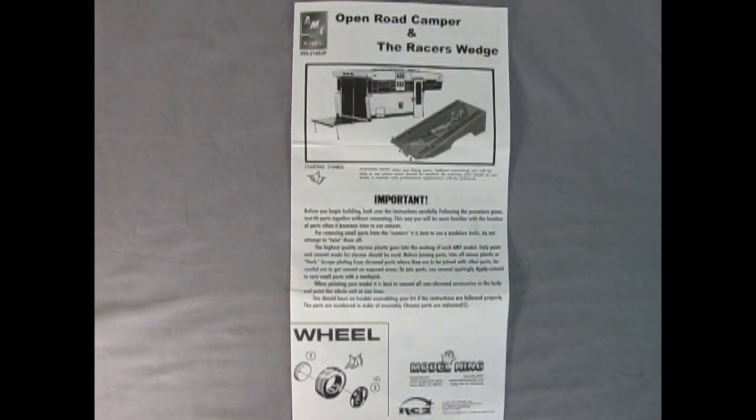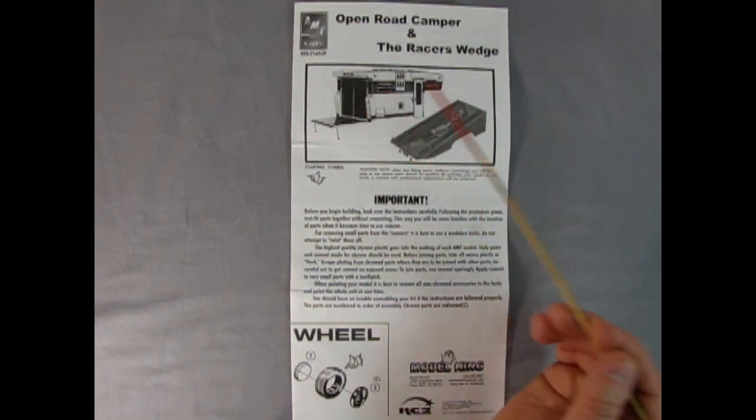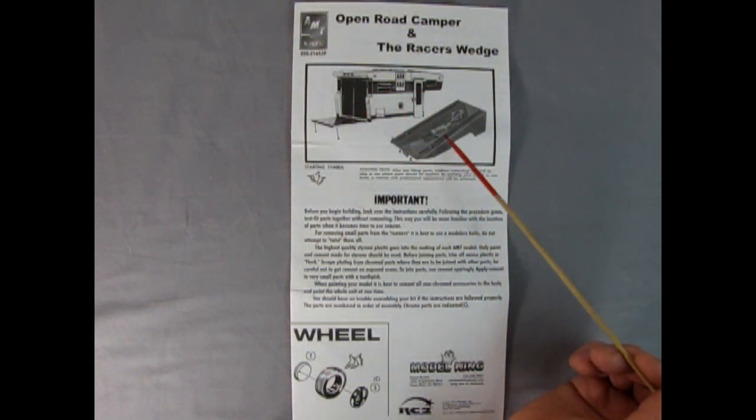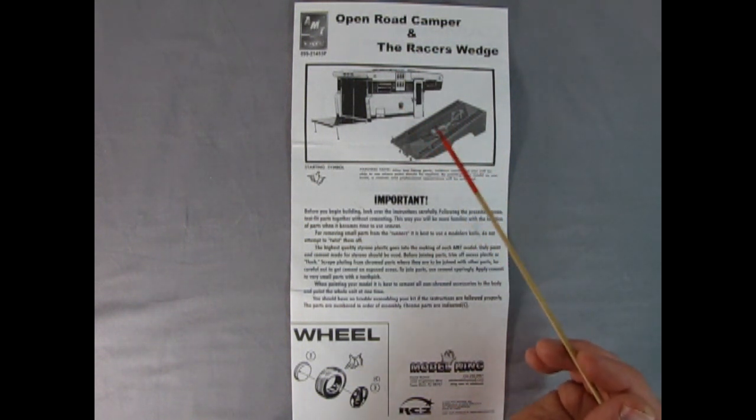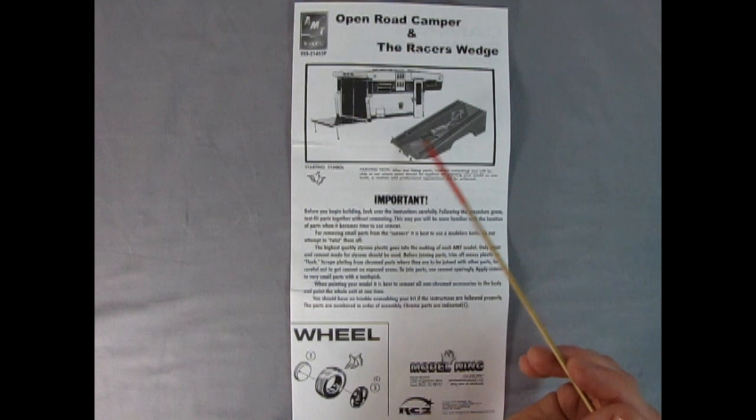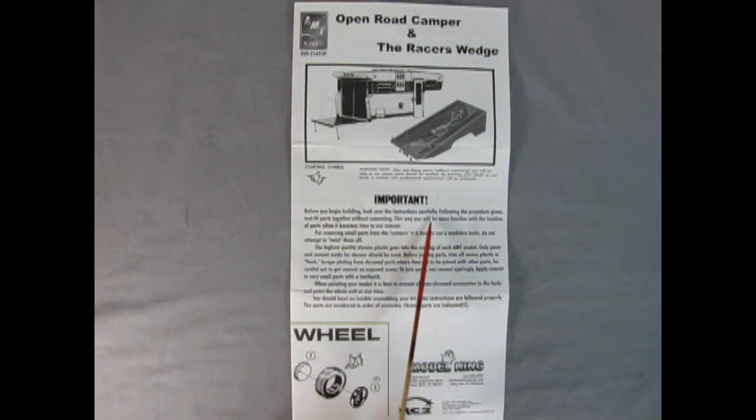The best place we can start our tour of our model kit is of course with the instructions. Here we get the Open Road Camper, which looks really great, and the Racers Wedge. Both of these can be dropped into different pickup trucks or mounted on the pickup truck chassis. Really cool things. Of course we have our important parts - before you begin building, look over the instructions carefully. Down here we have the wheels and tires going together.